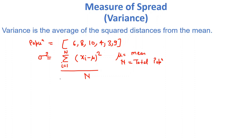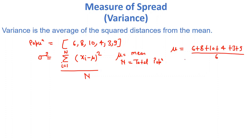To calculate the variance, first we need to calculate the mean value. So mu would be 6 plus 8 plus 10 plus 4 plus 3 plus 9, divided by 6, which comes out to approximately 6.67.